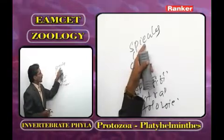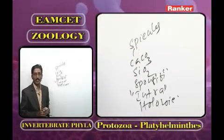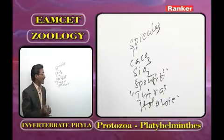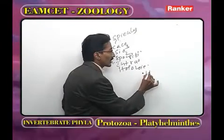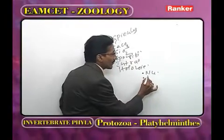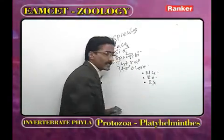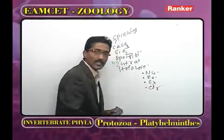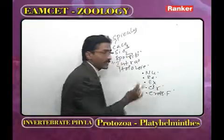The important character of Porifera is the canal system, also called the aquiferous system. Its functions include nutrition, respiration, excretion, circulation, and cross-fertilization.